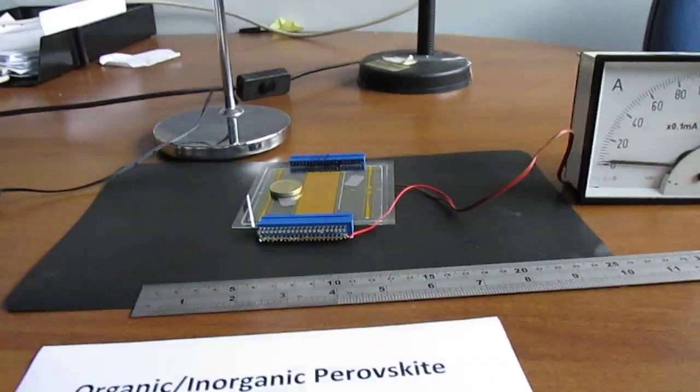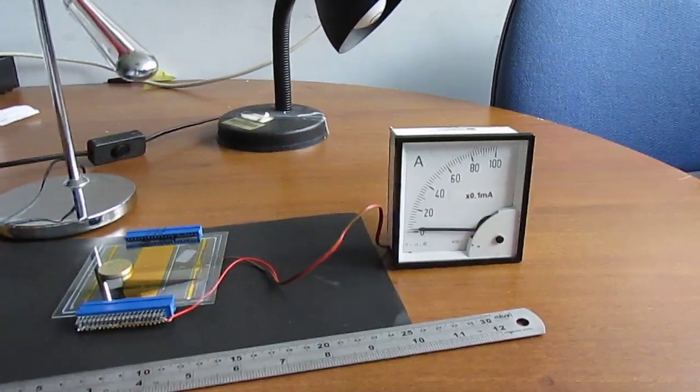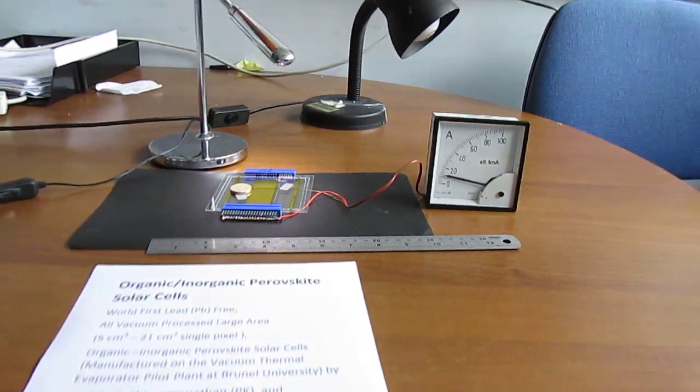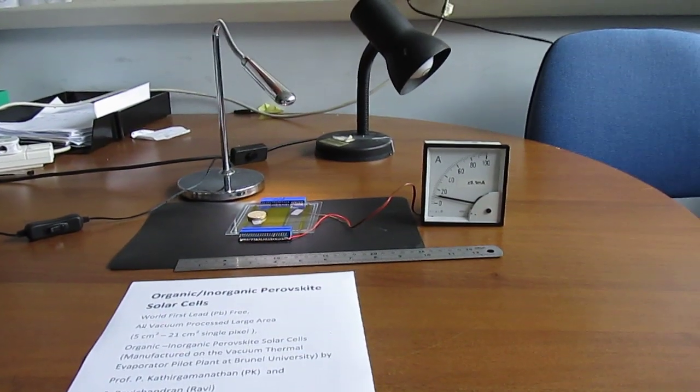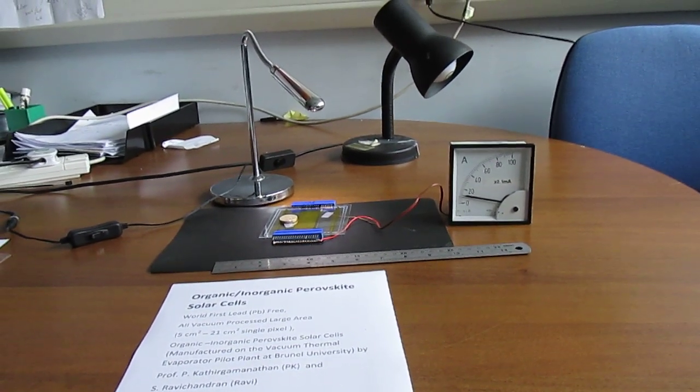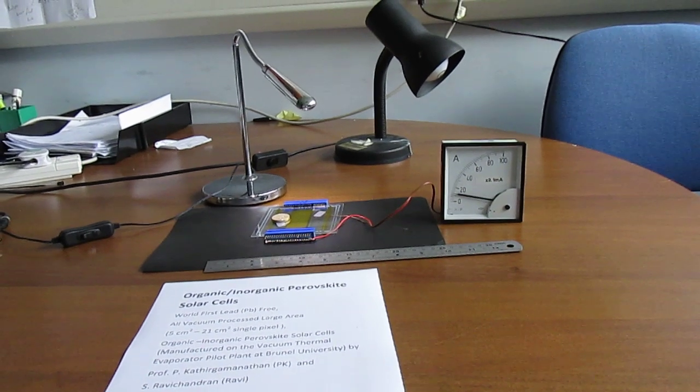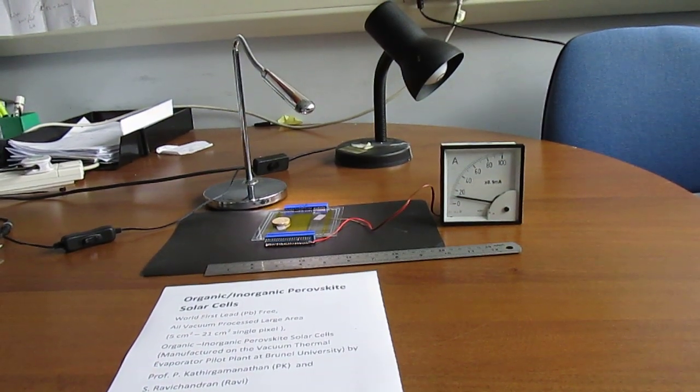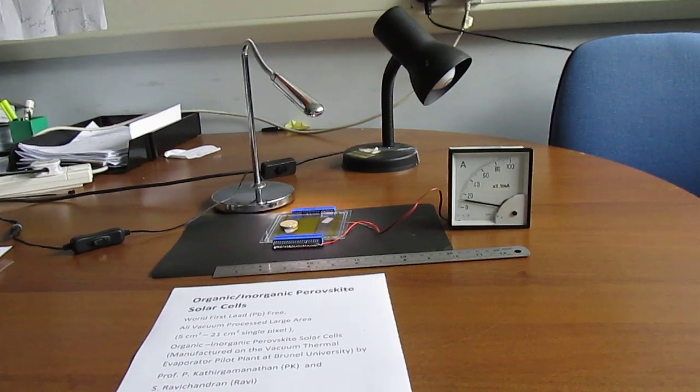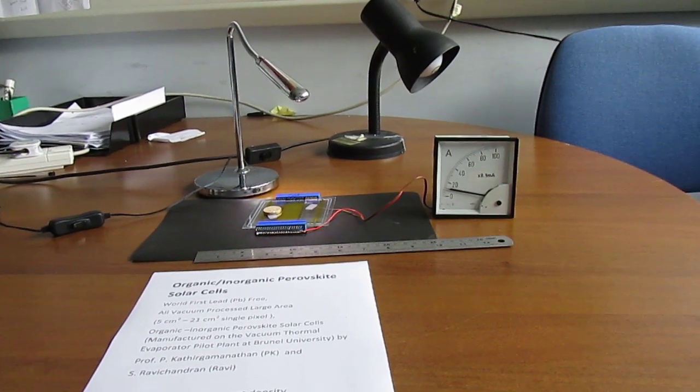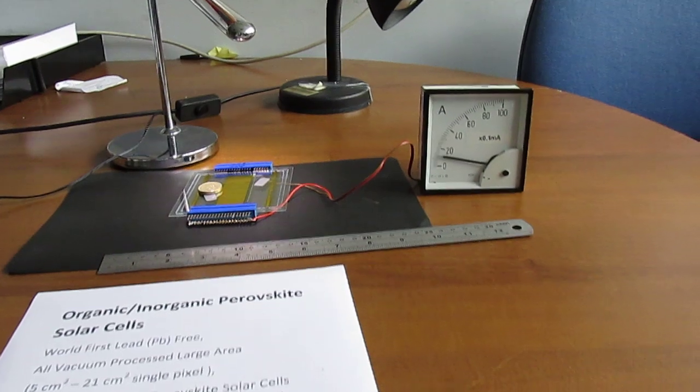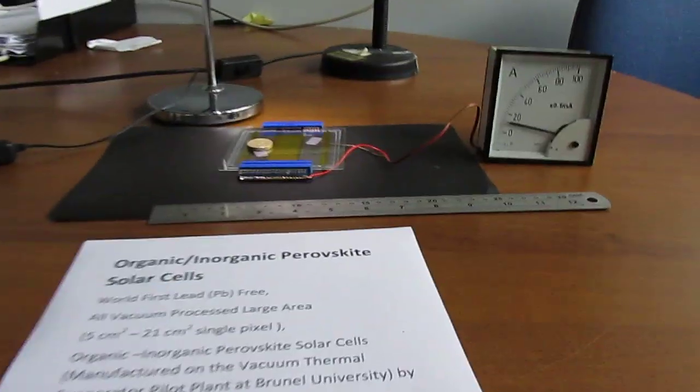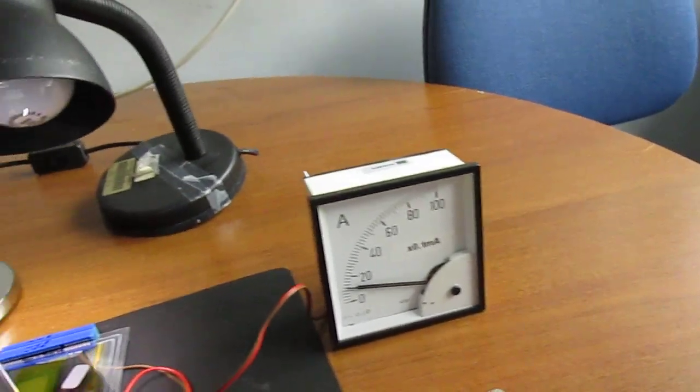Now I am going to turn the lights on. It's an LED lamp, and you can see immediately it goes up to about 11 units, which means 1.1 milliamp current. And if I turn another lamp on,